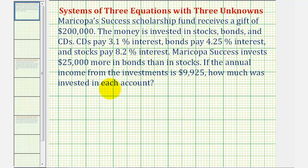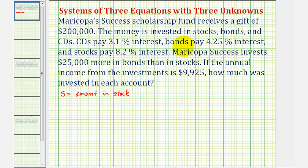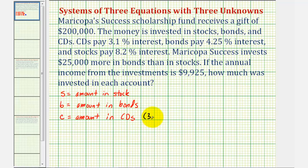This is a common question when looking at applications involving systems of three equations with three unknowns. The first thing to recognize is that we have three different types of accounts that pay different interests. Let's define our variables: S equals the amount invested in stocks, B equals the amount invested in bonds, and C equals the amount invested in CDs. Note that CDs pay 3.1%, bonds pay 4.25%, and stocks pay 8.2% interest.